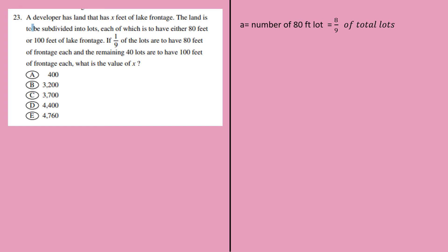If I'm treating A to be the number of 80-feet lot and B to be the number of 100-feet lot, it says that eight-ninths of the total lot is A and one-ninth of the total lot is B. And it is also given that 40 lots are to have 100 feet of frontage. So 100 feet of frontage is 40. My B is 40.